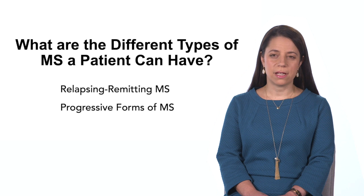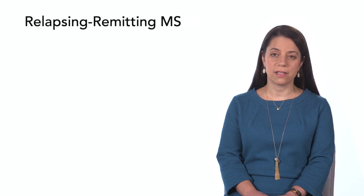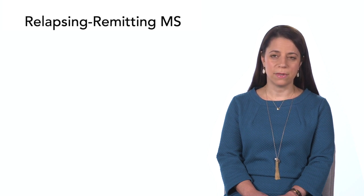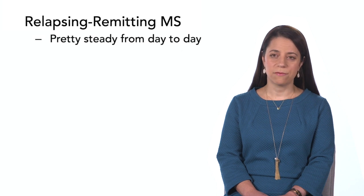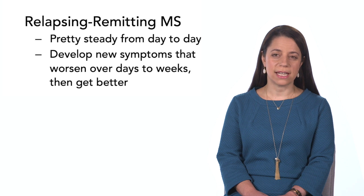The different types of MS include relapsing-remitting MS and progressive forms of MS. This correlates with different MS disease processes. Relapses or inflammation go with relapsing-remitting MS — a patient would tell me they are pretty steady from day to day, but then develop new symptoms that worsen over days to weeks, and then get better over days to weeks. That would be a typical MS relapse.